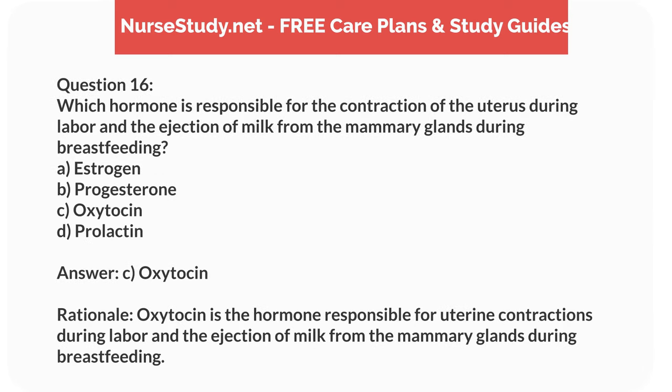Answer: C. Oxytocin. Rationale: Oxytocin is the hormone responsible for uterine contractions during labor and the ejection of milk from the mammary glands during breastfeeding.